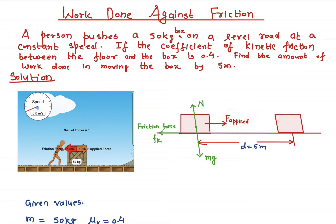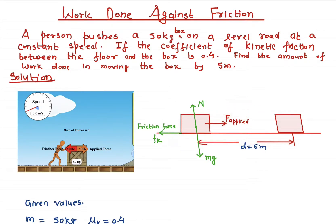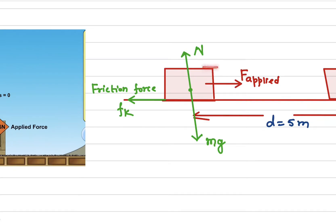We have to find out how much work is done by the applied force if we move this object five meters. Let me repeat the question: we have a 50 kilogram object, we're applying a force, and the object is moving with five meters per second. How much work is done if the distance moved is five meters?